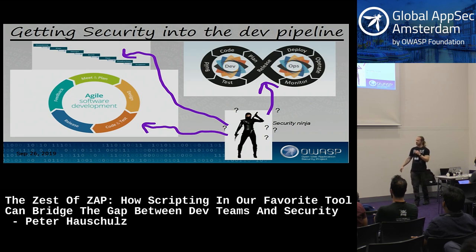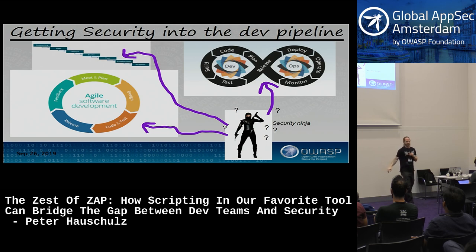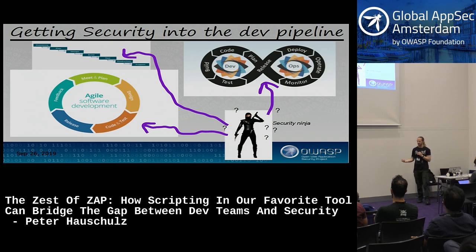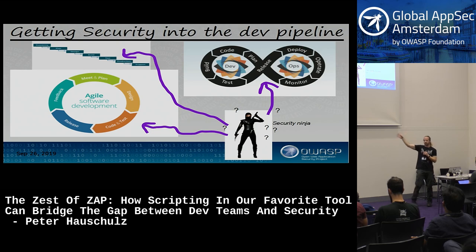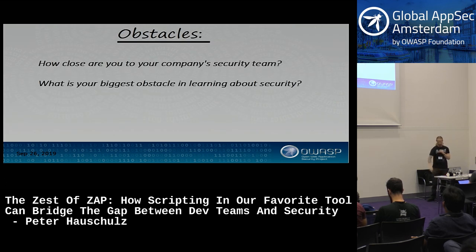How do we get security into the dev pipeline? We've got our agile loops, our DevOps infinity cycle, and our waterfall—where does security fit? Companies love talking about doing security, but when it comes to actually placing it somewhere in the pipeline, usually it's tacked on at the end. And unfortunately, with testing that's usually the case as well.